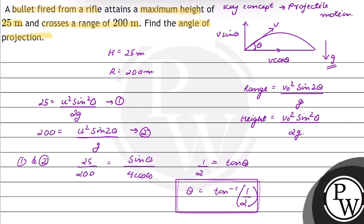So the angle of projection is equal to tan inverse 1 by 2. Hope you understood this well, best of luck.